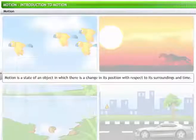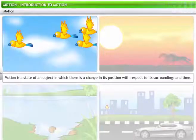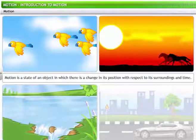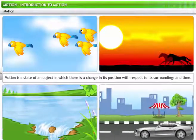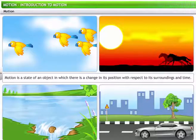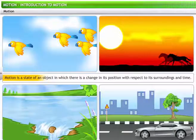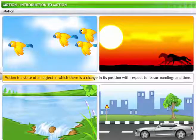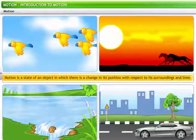In everyday life, you see some objects at rest and others in motion. Birds fly, horses gallop, water flows through rivers, and cars move. You see these are in motion. Thus, motion is a state of an object in which there is a change in its position with respect to its surroundings and time.